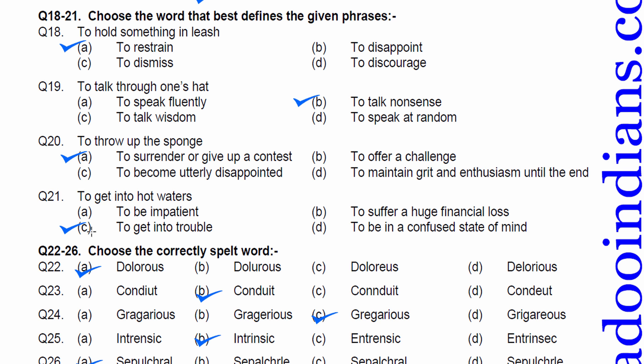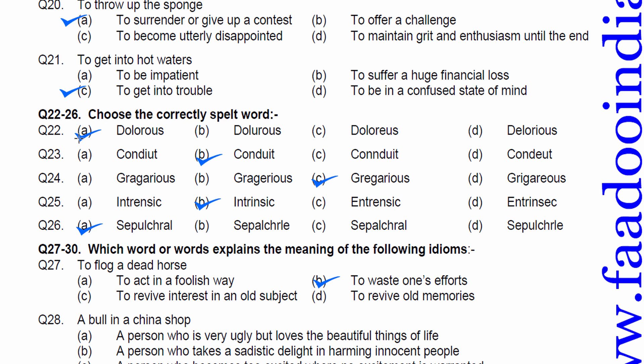Twenty-two to twenty-six. Choose the correctly spelt word. Following other spellings, you can always check from here. A is dolorous. D-O-L-O-R-O-U-S. Following marked correct spellings. Second is conduit. C-O-N-D-U-I-T. Gregarious. G-R-E-G-A-R-I-O-U-S. Intrinsic. I-N-T-R-I-N-S-I-C. Sepulchral. S-E-P-U-L-C-H-R-A-L.